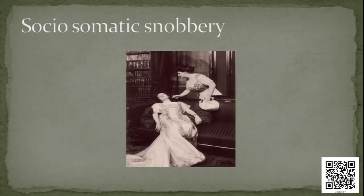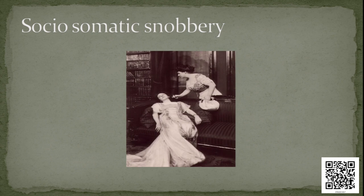A related term is 'sociosomatic snobbery,' used in the 19th century for elite rich ladies who would faint on hearing bad news. This was part of their social training. 'Socio' relates to society, 'somatic' to the body — so when your body reacts according to social training. 'Snobbery' is when you look down upon others or feel others are inferior. Rich ladies of 19th-century England were trained to be very delicate, fragile, and pretty.